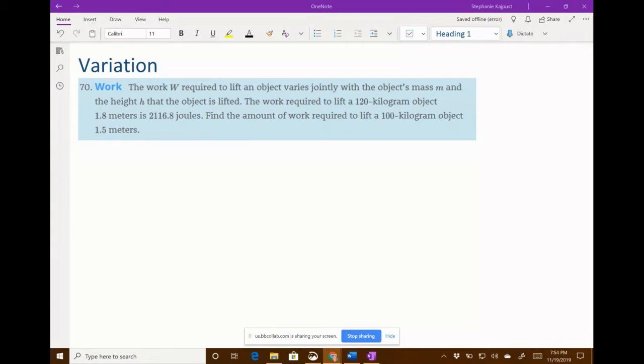Variation problems, basically the only way to get used to them is doing lots of different types. So we have the work W required to lift an object varies jointly. Jointly means that we are multiplying two things together.